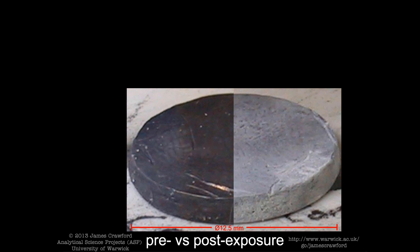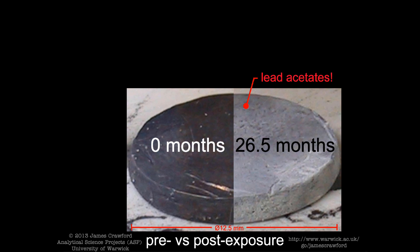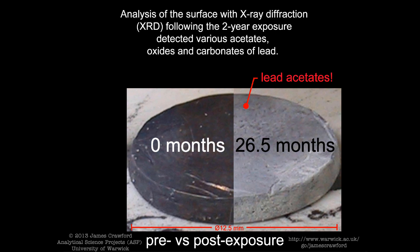Here, the lead before and after exposure is compared. Analysis of the surface with X-ray diffraction following the two-year exposure detected various acetates, oxides and carbonates of lead. The specific compounds are considered in a forthcoming publication.